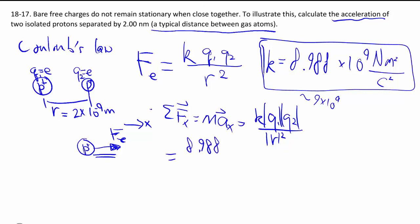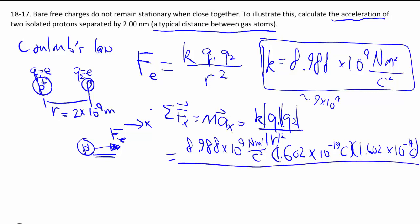Rest is just kind of plugging numbers in. The proton, of course, has the same magnitude of charge as an electron, does one proton worth of charge cancel one electron worth of charge, except of course it's positive, which in this case we just take the magnitude anyways.